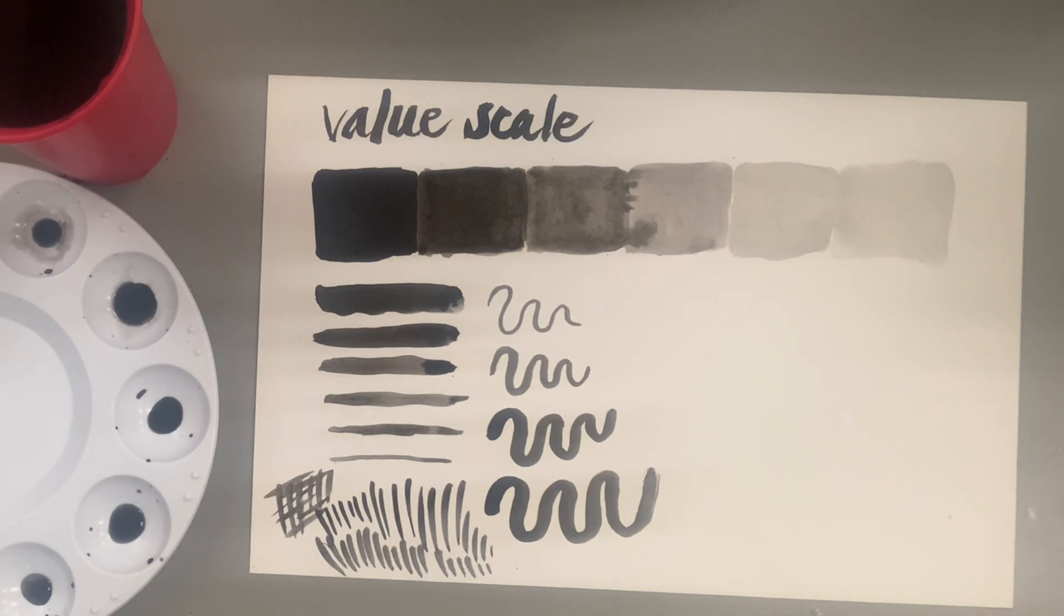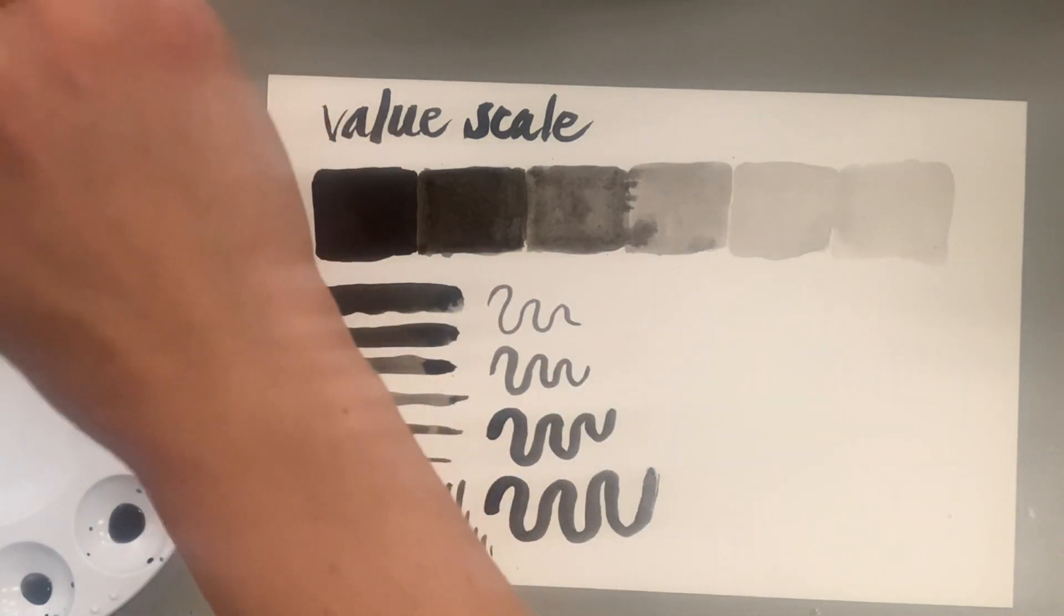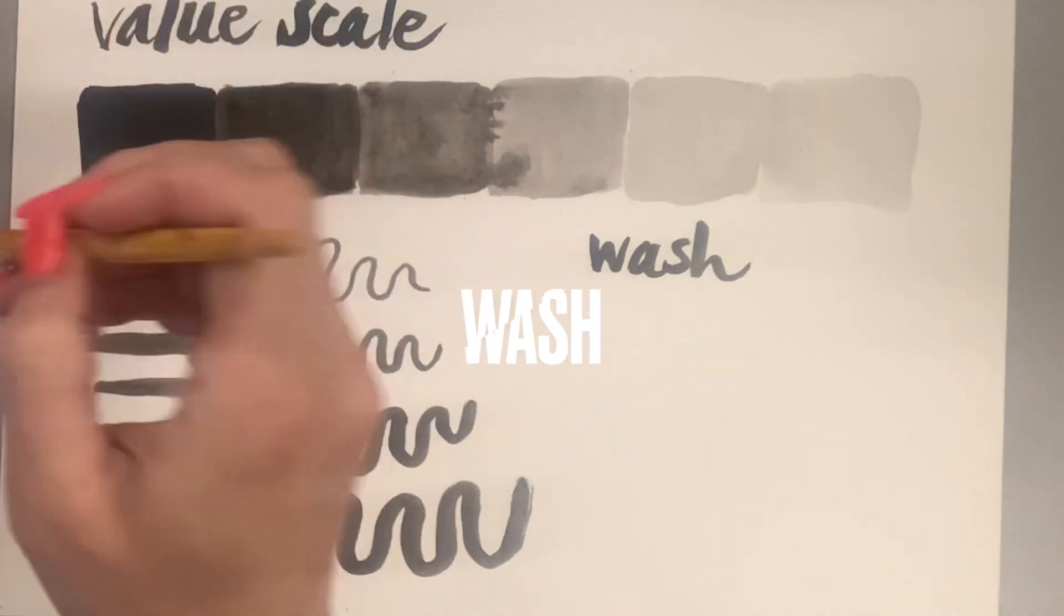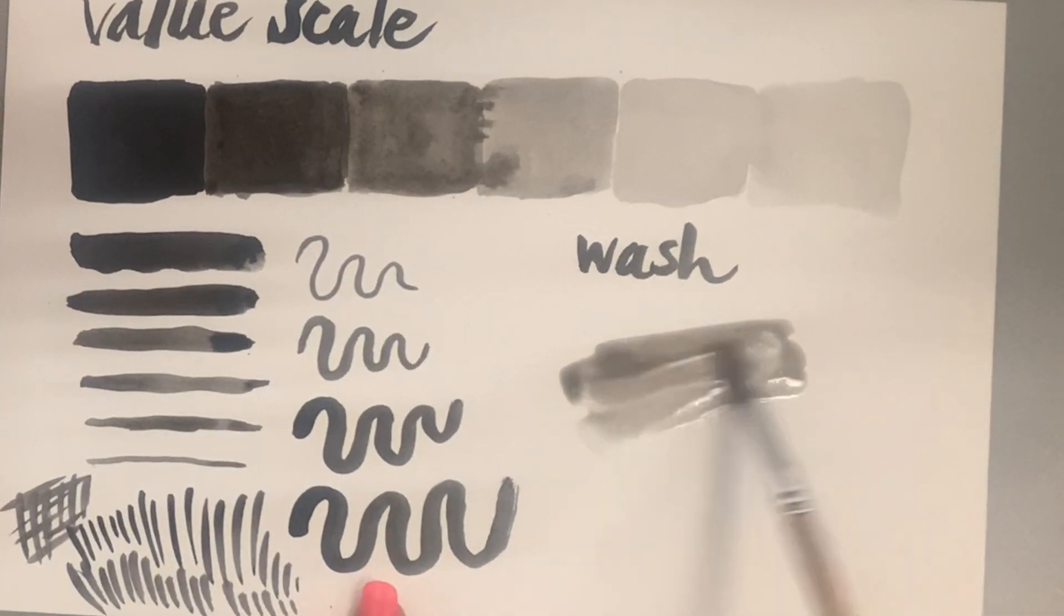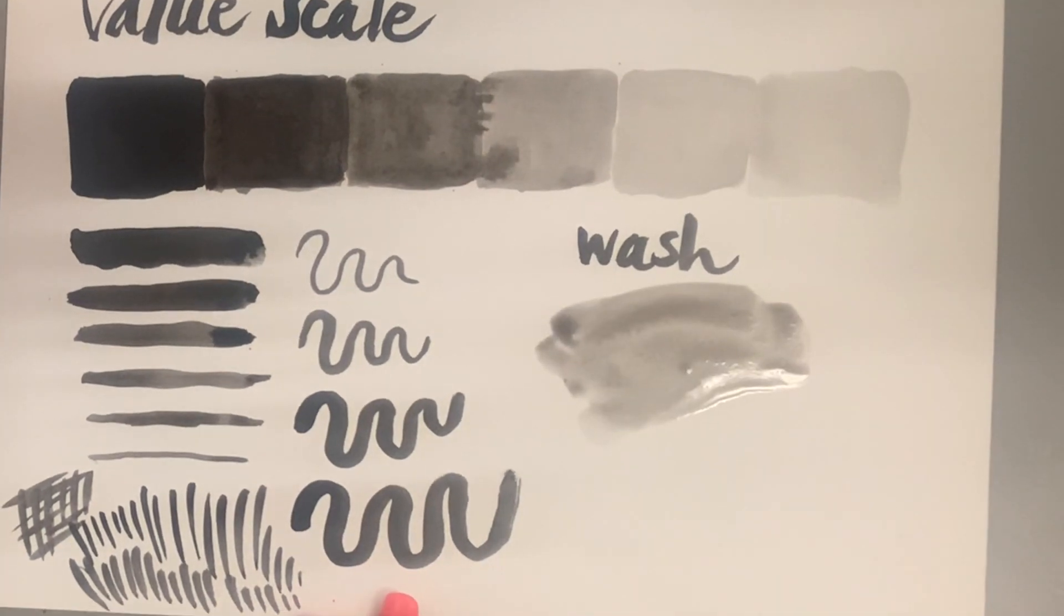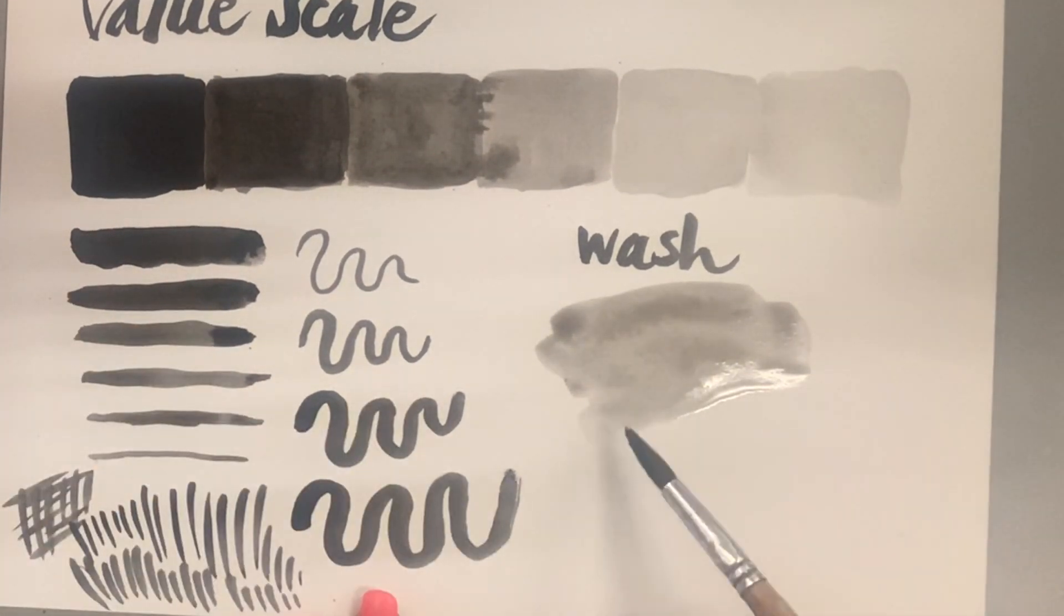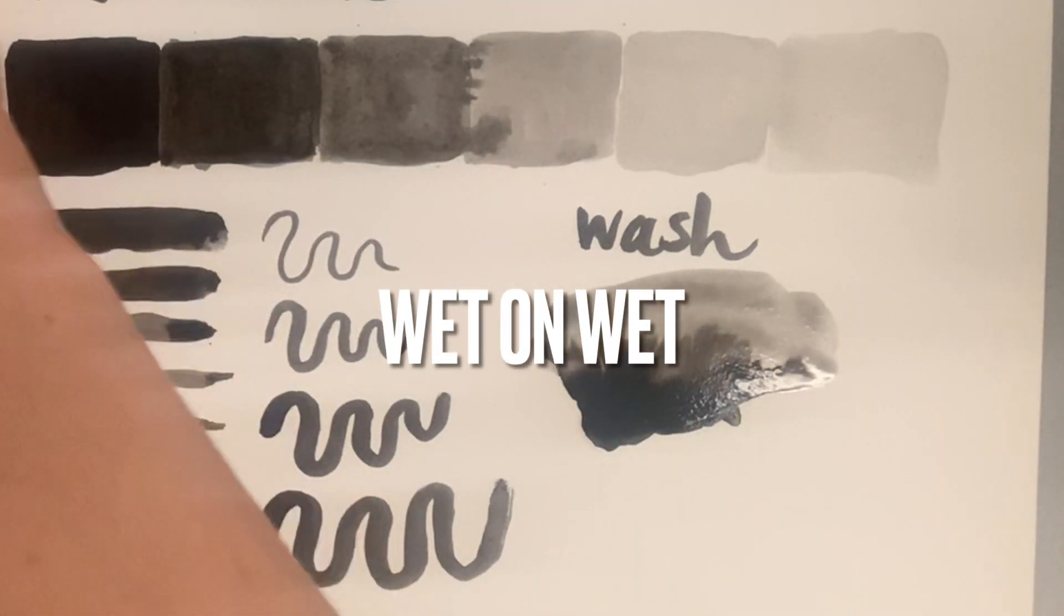I'm going to play with some wash techniques. Washes are large areas of paint, or in this case ink, that are broad, diluted with water, and cover a large surface evenly. Now I'm doing a wet-on-wet technique where I did my gray wash and then I dipped a darker value into it.